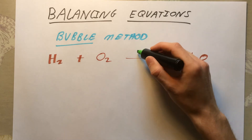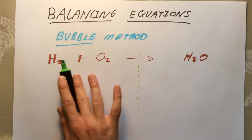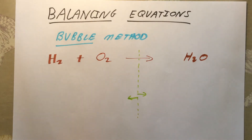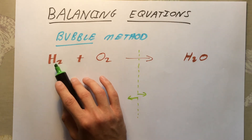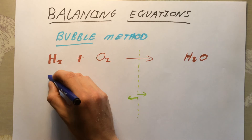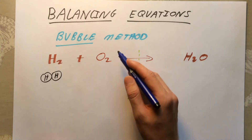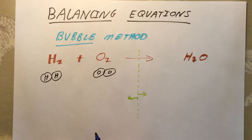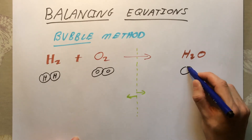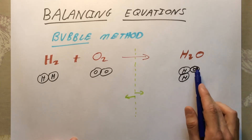Using the bubble method, the first thing to do is draw a dashed line down the middle — that's your reference point. You need exactly the same number of each type of atom on the left and right of it. For H₂, draw two hydrogen atoms joined together. For O₂, draw two oxygen atoms joined together. On the right-hand side, H₂O has two hydrogen atoms and one oxygen atom all joined together.